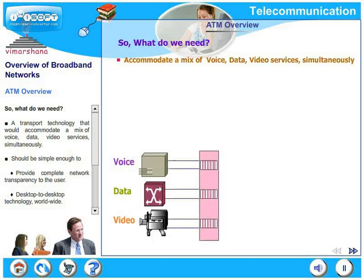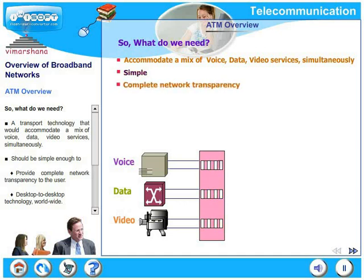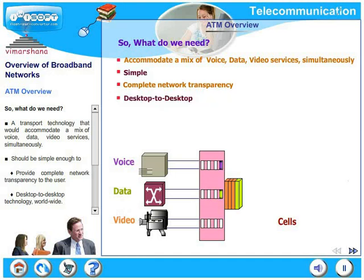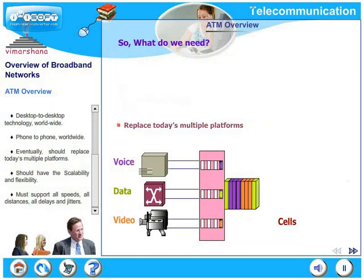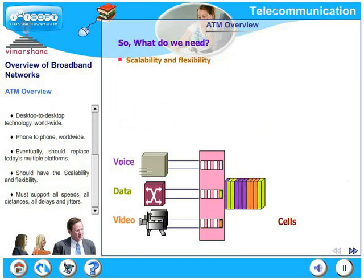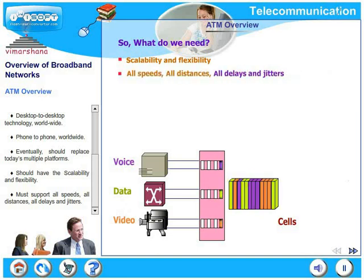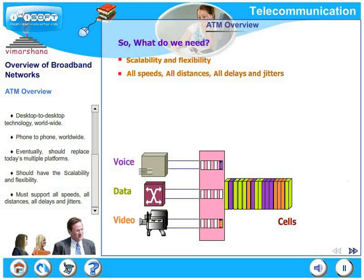This is the first requirement. It should be simple enough to provide complete network transparency to the user. Of course, it should be desktop to desktop technology worldwide, phone to phone worldwide. Eventually, it should replace today's multiple platforms. It should have the scalability and the flexibility. It must support all speeds, all distances, all delays and jitters. You are already seeing the conflicting requirements for a single network to handle.